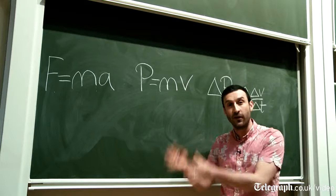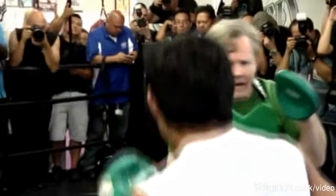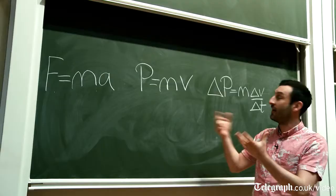That's a good example of momentum being transferred from one object to another. In boxing, you're transferring momentum from the boxer's fist to the opponent's head.